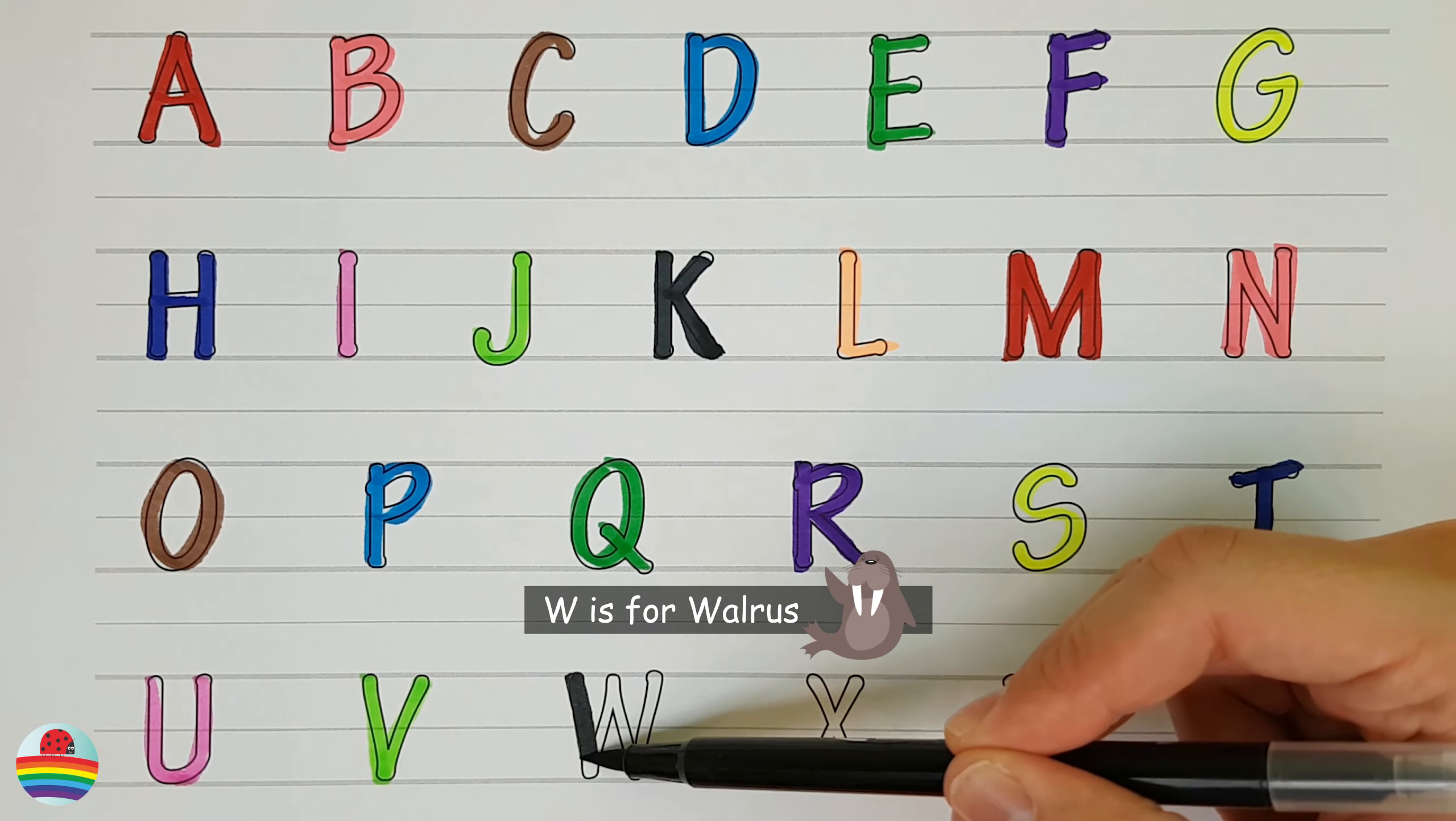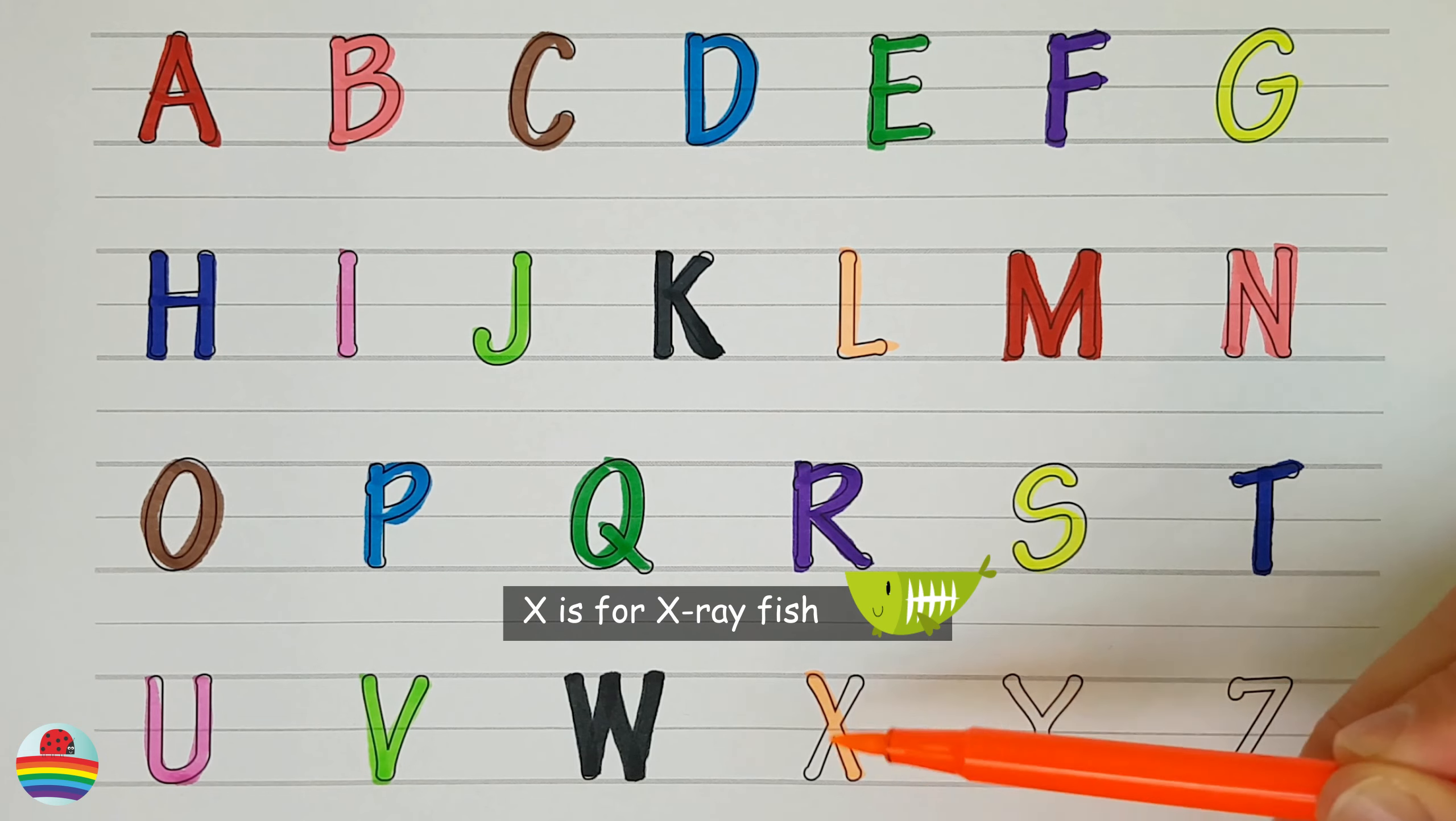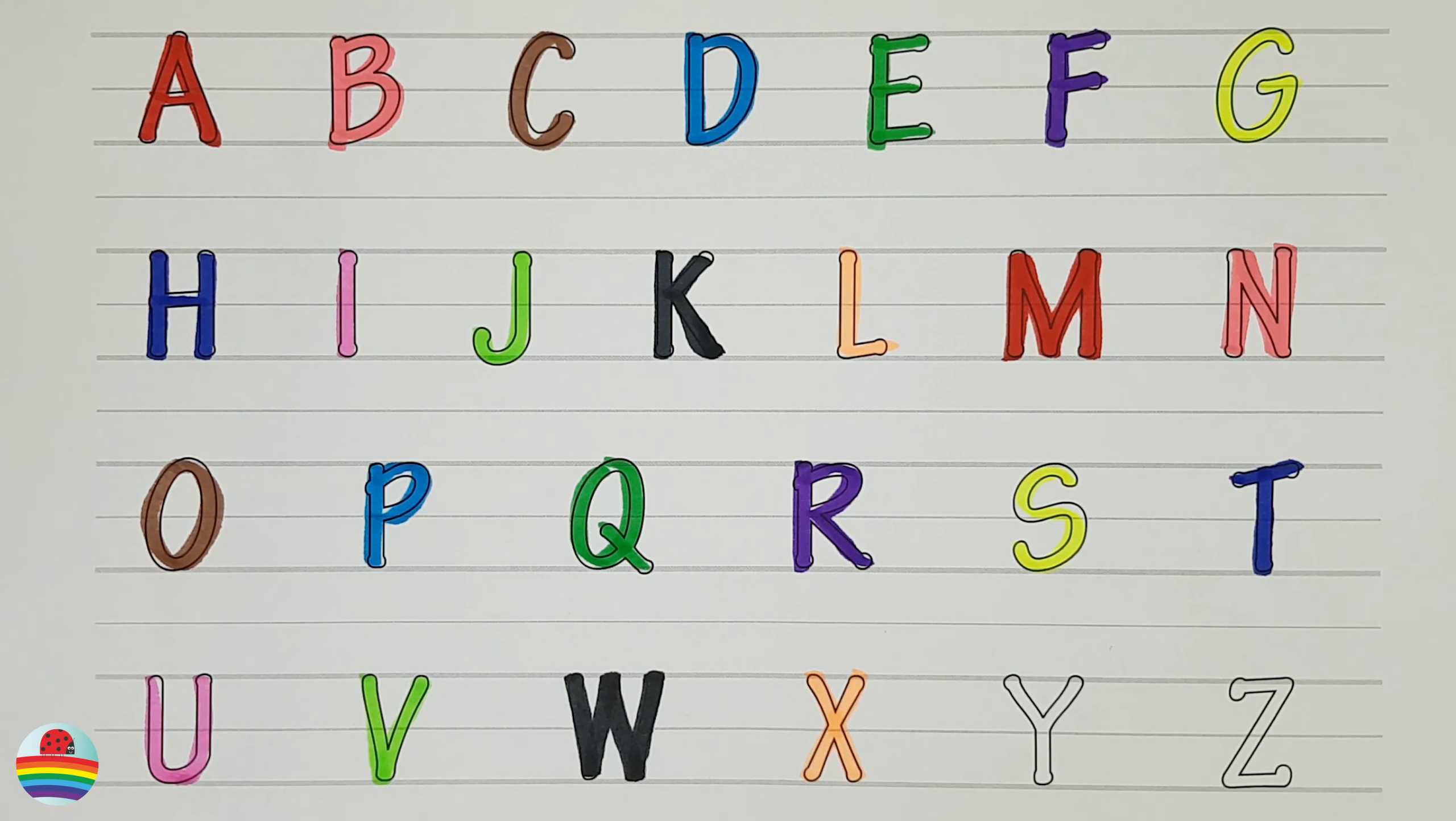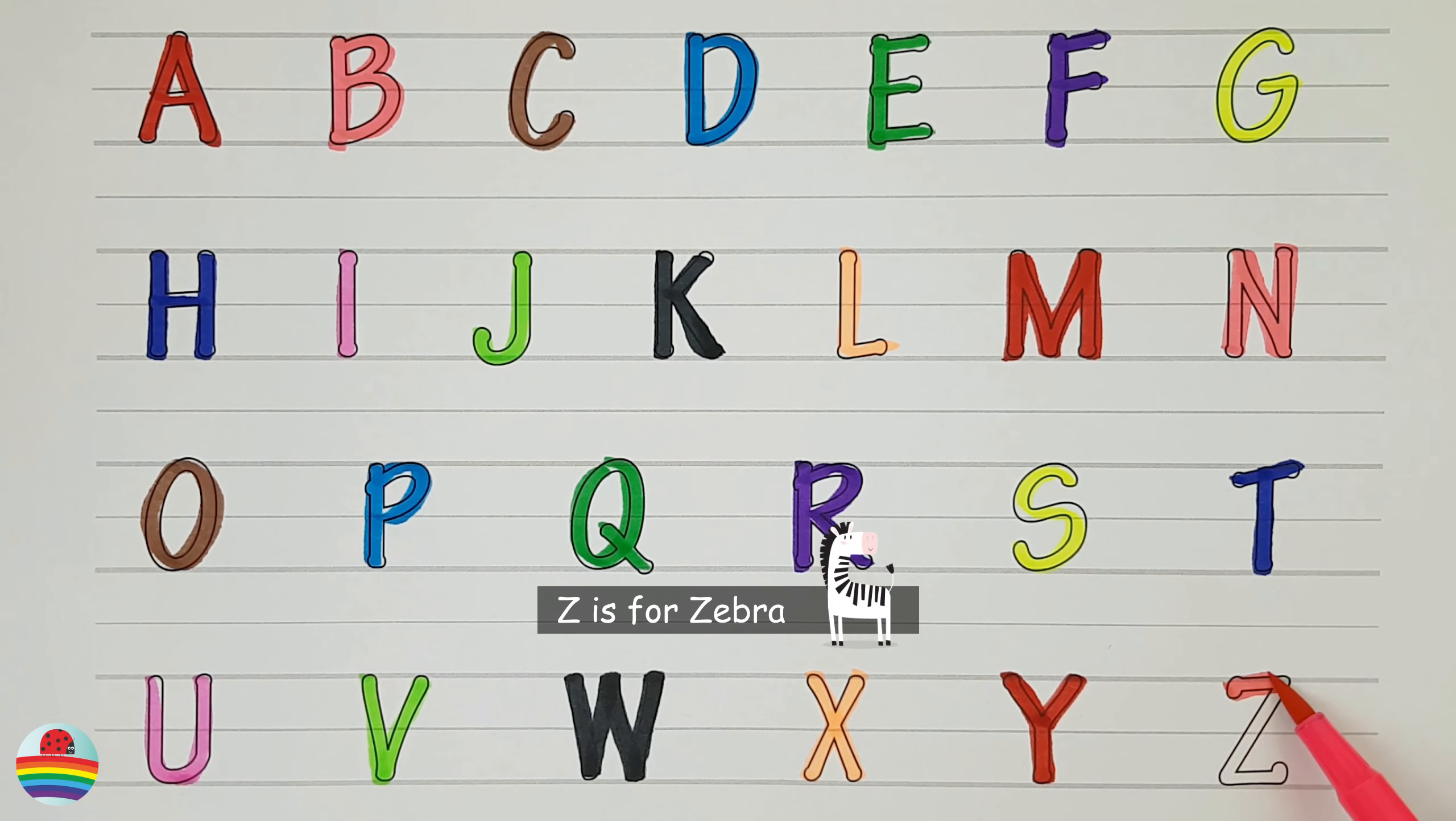W. W is for walrus. X. X is for x-ray fish. Y. Y is for yak. Zed. Zed is for zebra.